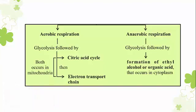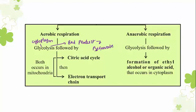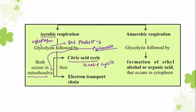Glycolysis occurs in the cytoplasm, and the end product is pyruvate or pyruvic acid. If the respiration is aerobic, the pyruvate enters into the mitochondria, and in the mitochondria it undergoes the citric acid cycle — also known as the Krebs cycle, named after its discoverer Hans Krebs.